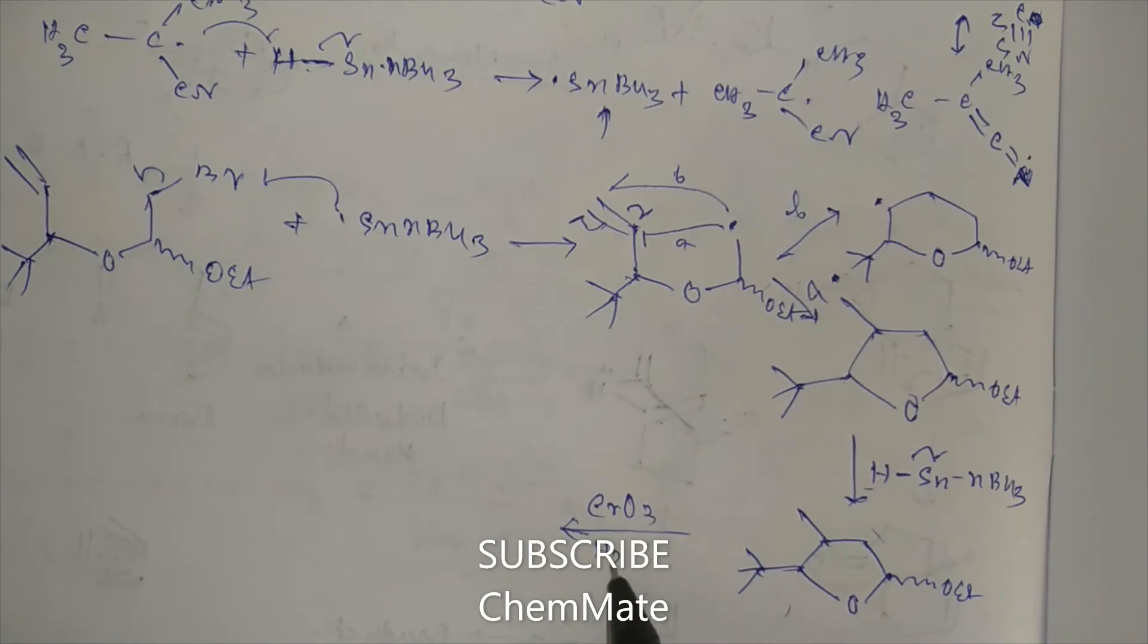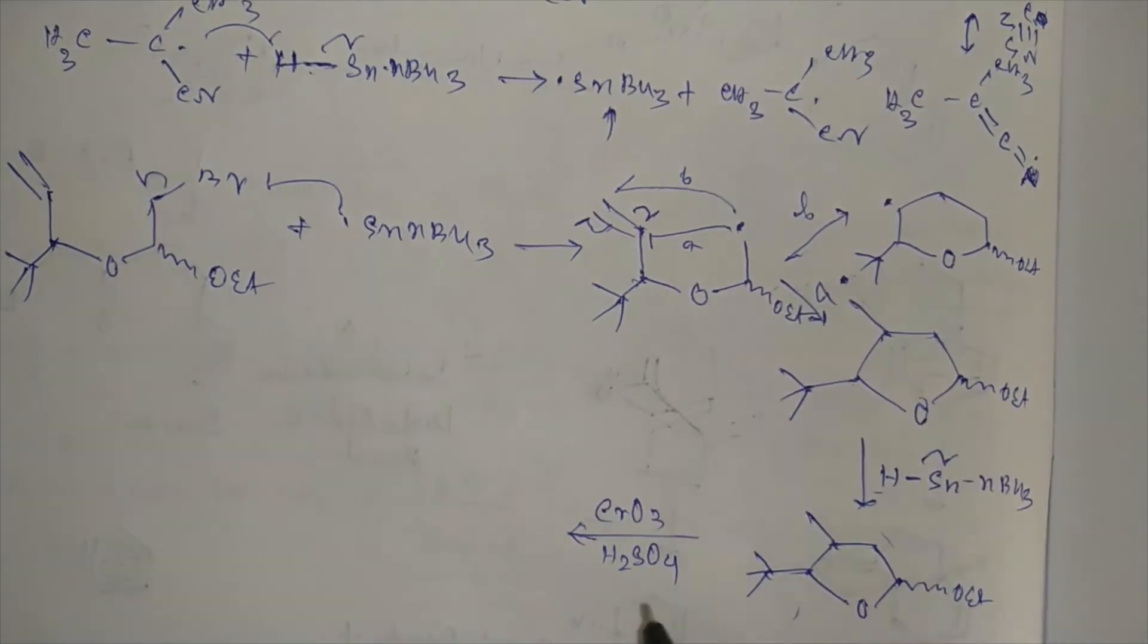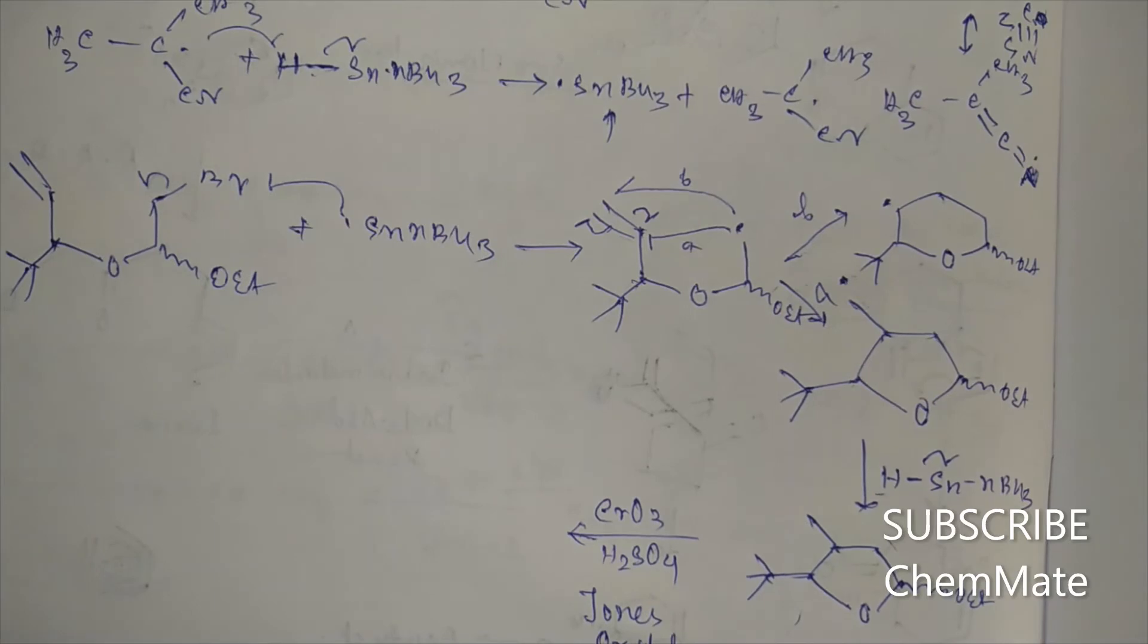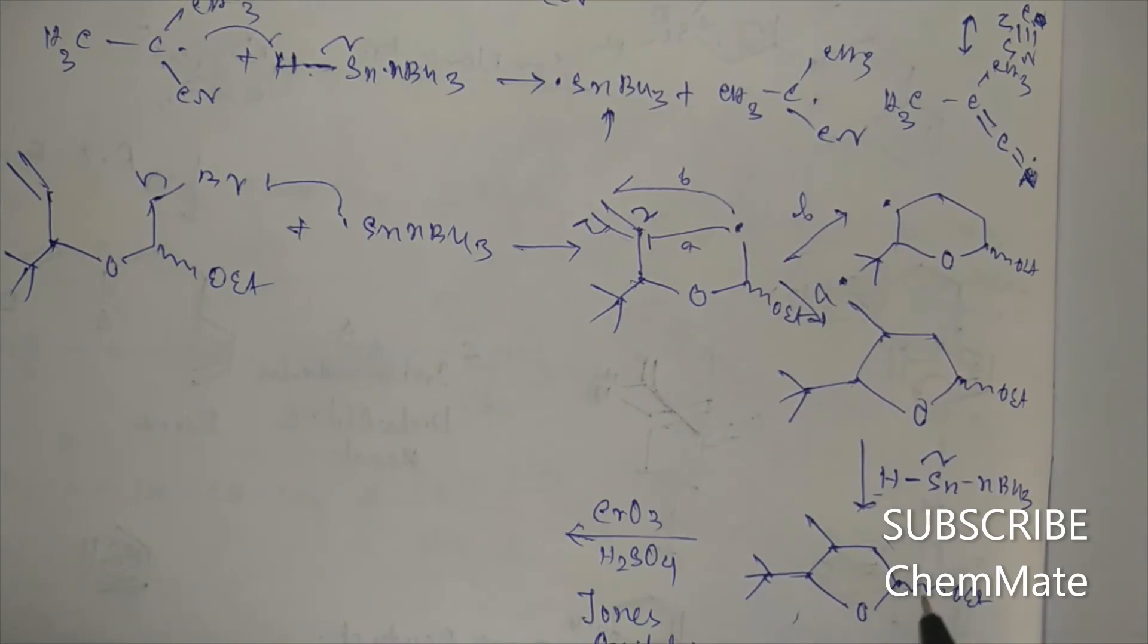This is H2SO4/CrO3. This is Jones oxidation. It is called Jones reagent. It will oxidize this acetal to a keto group.